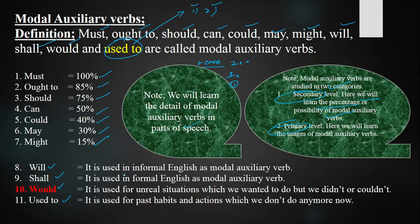Today we are going to discuss the 10th modal auxiliary verb: 'would'. It is used for unreal situations — unreal facts which you have not done, or which you wanted to do in the past but didn't or couldn't. For example, 'I would help you' — I didn't help you because you did not help me when I needed it, and I couldn't means I did not have the chance to help you. Those are actions in the past we wanted to do but didn't or couldn't.